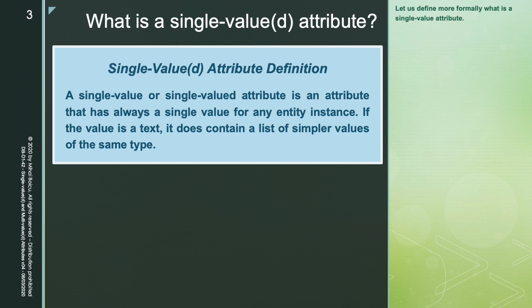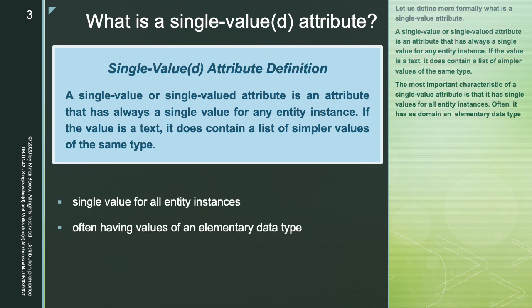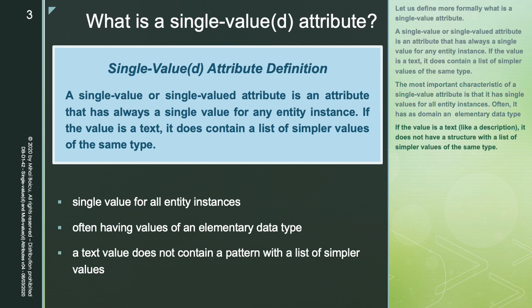Let us define more formally what a single-value attribute is. A single-value or single-valued attribute is an attribute that always has a single value for any entity instance. If the value is a text, it does not contain a list of simpler values of the same type. The most important characteristic is that it has a single value for all entity instances; often its domain is an elementary data type. If the value is text, like a description, it does not have a structure with a list of simpler values of the same type.